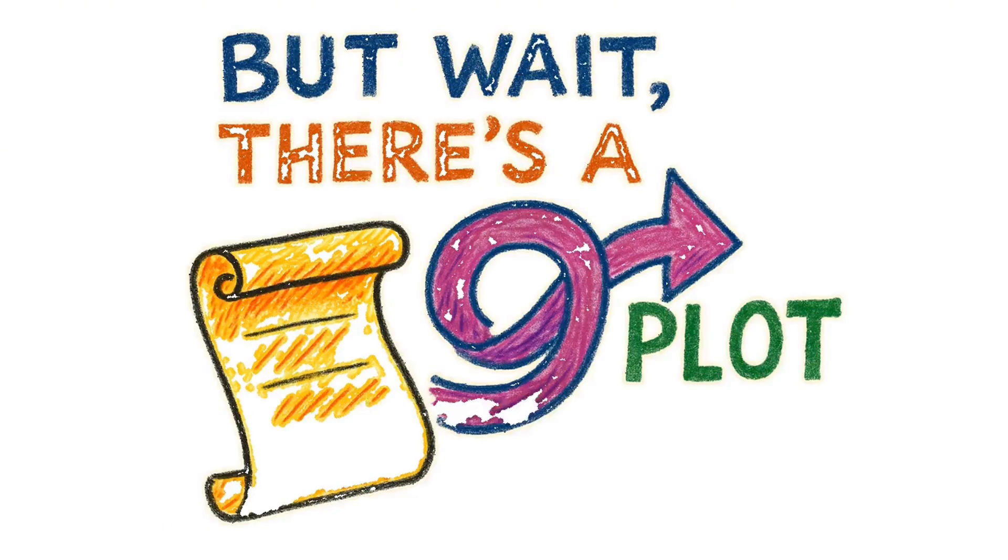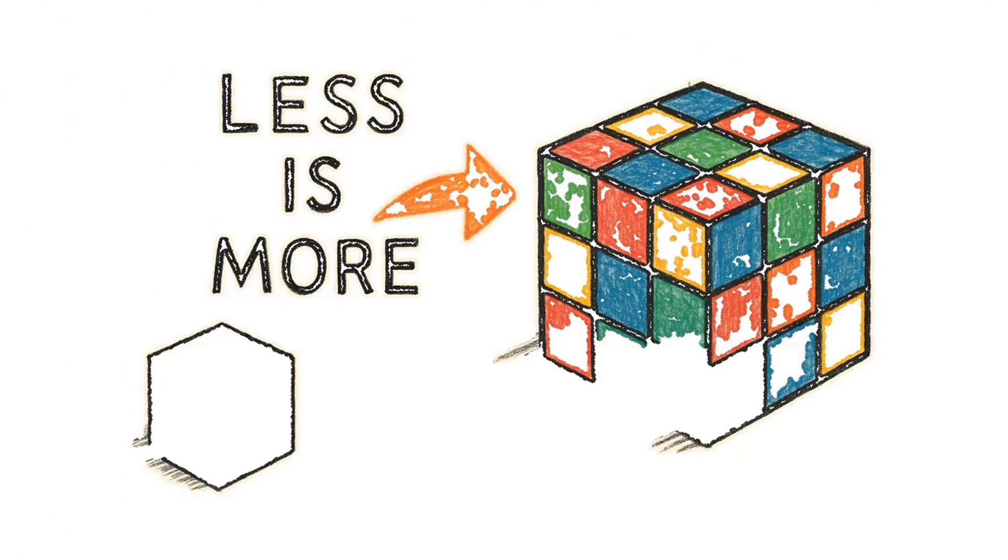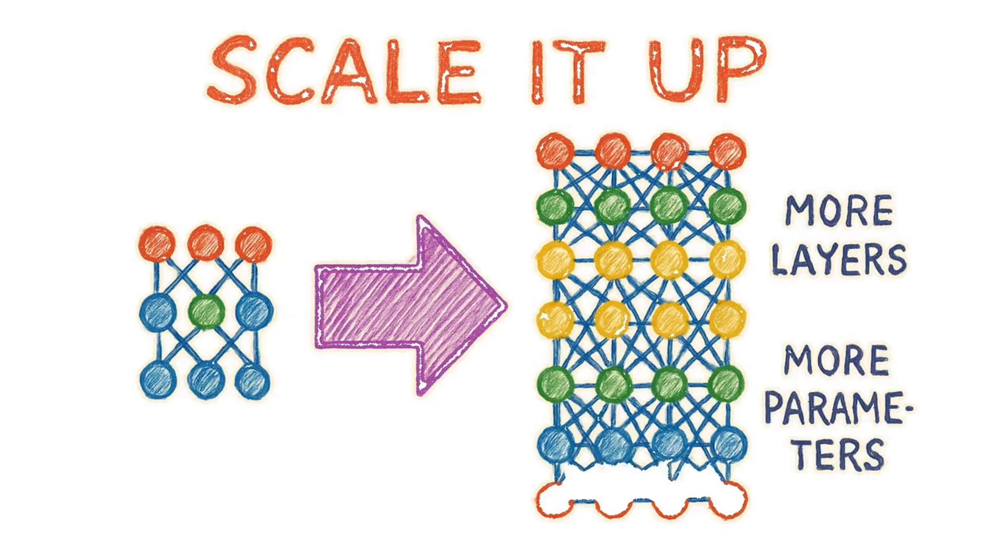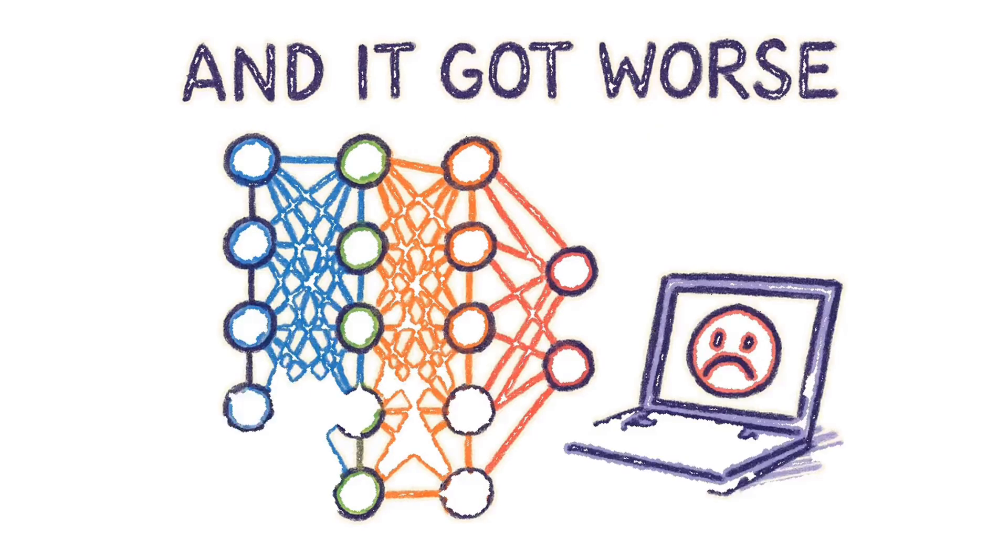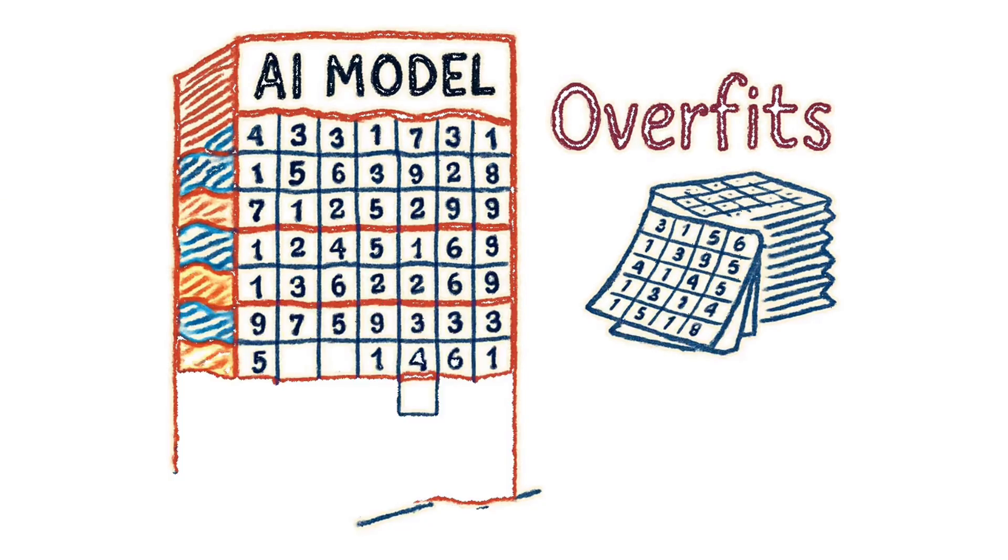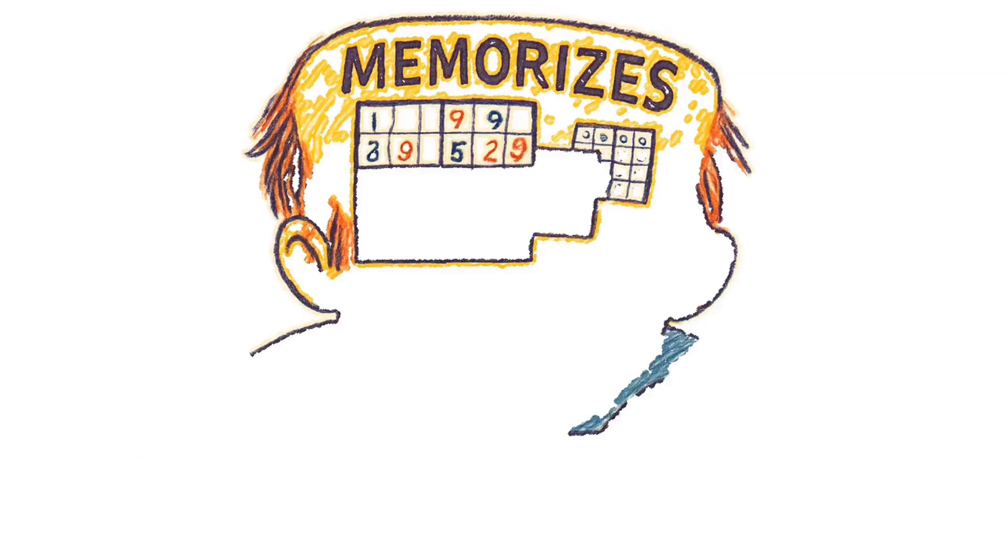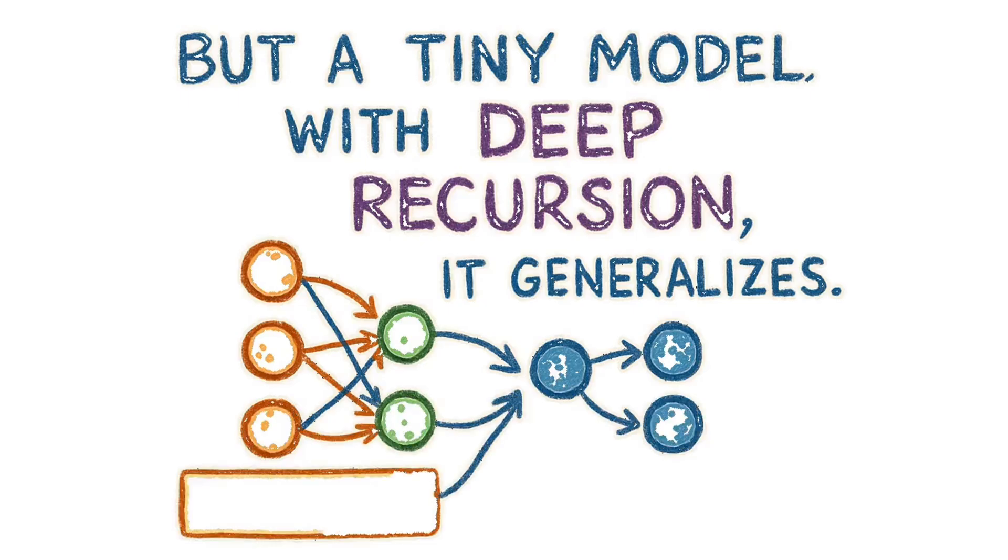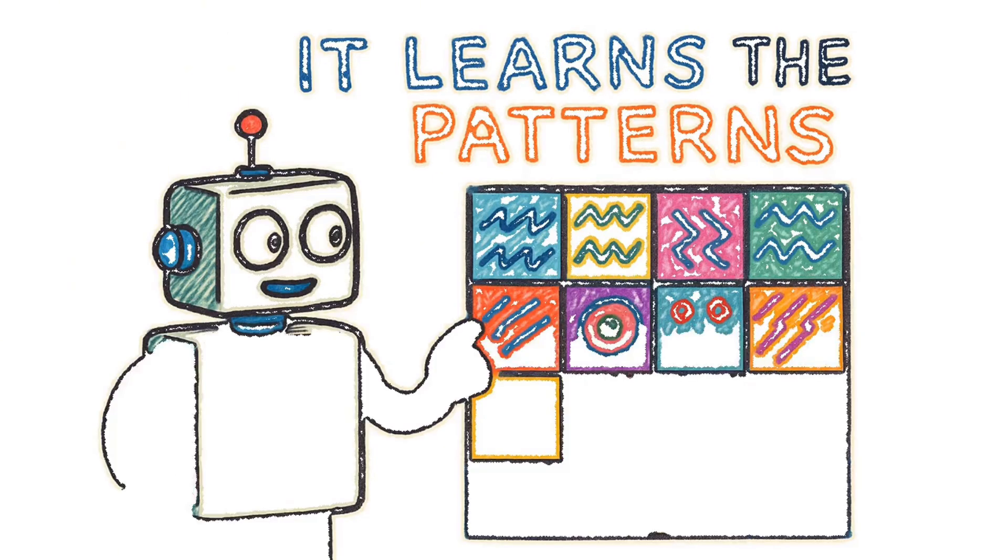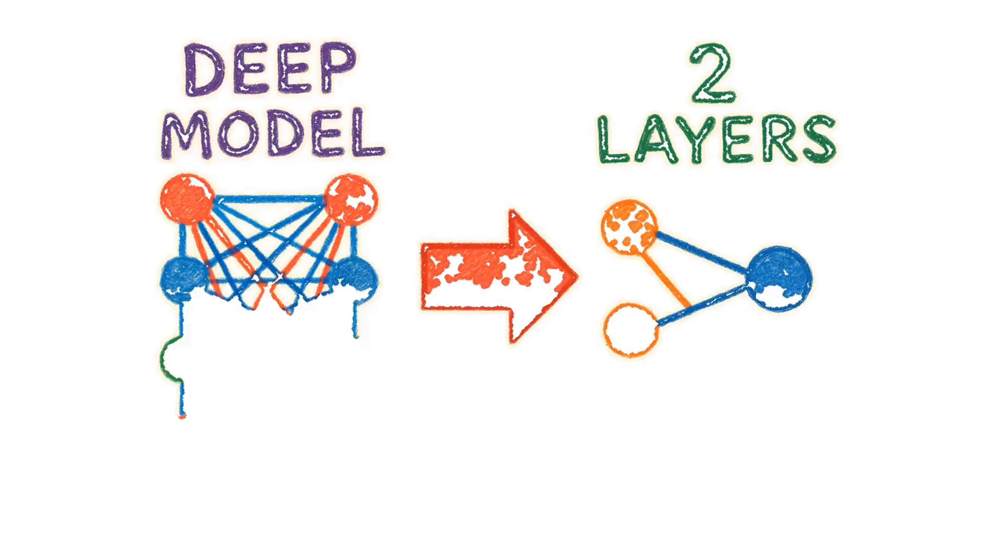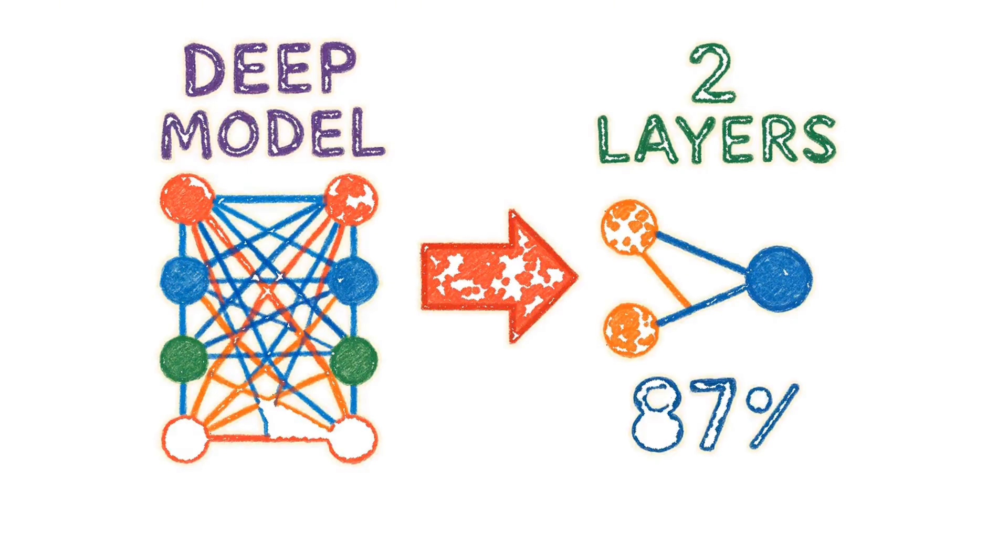But wait, there's a plot twist. The researchers discovered that less is literally more. They tried making the model bigger, adding more layers and parameters, the usual scale it up approach. And it got worse. Turns out, with limited training data, like a thousand Sudoku puzzles, a massive model just overfits. It memorizes instead of learning. But a tiny model with deep recursion, it generalizes. It actually learns the patterns. So they went the opposite direction, cut the model down to just two layers, and boom, 87% accuracy.